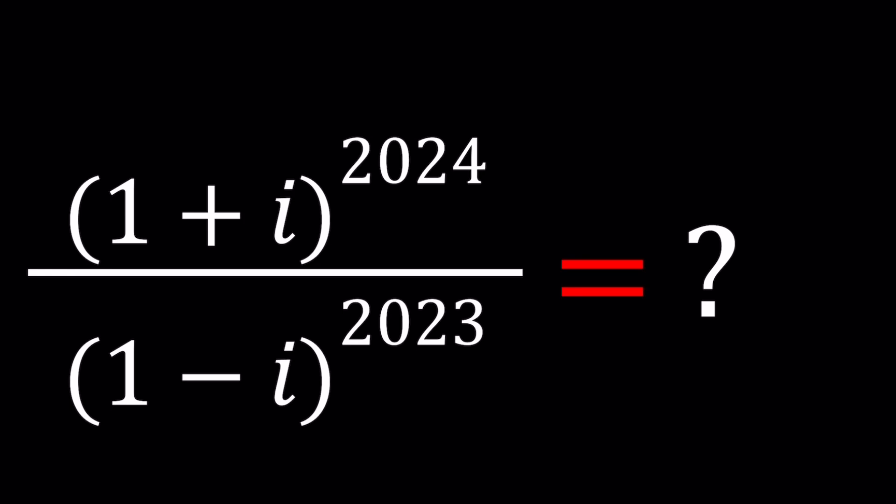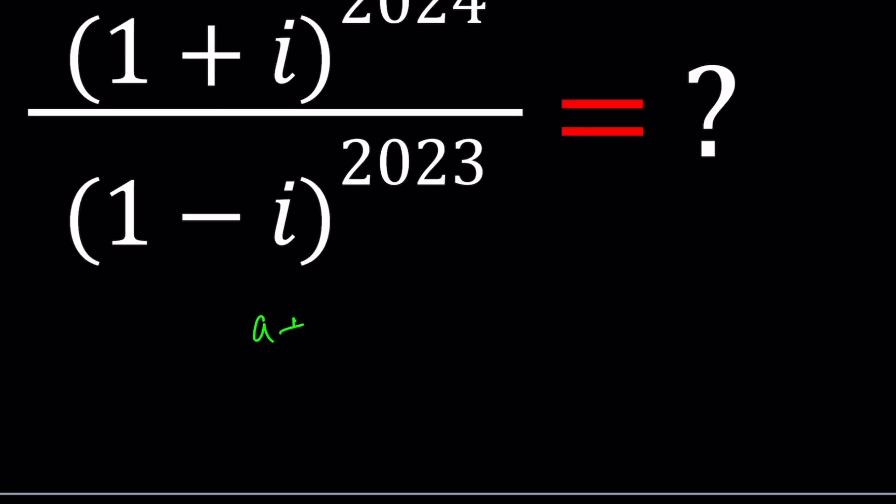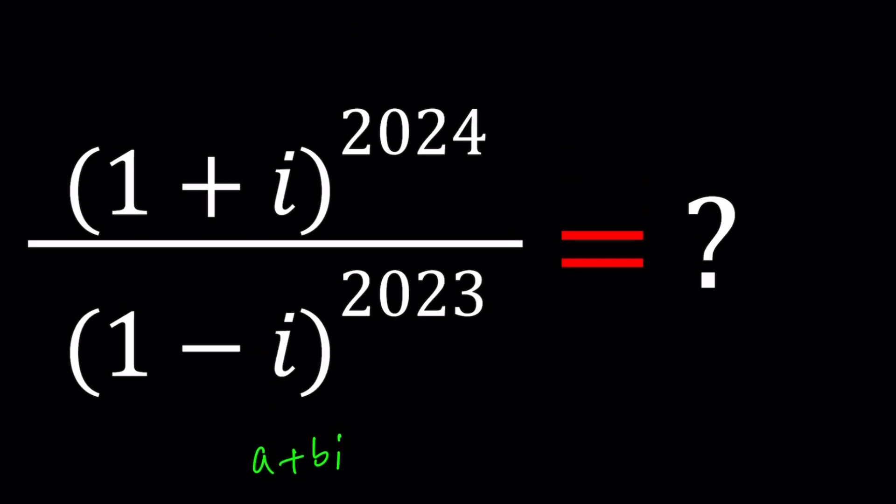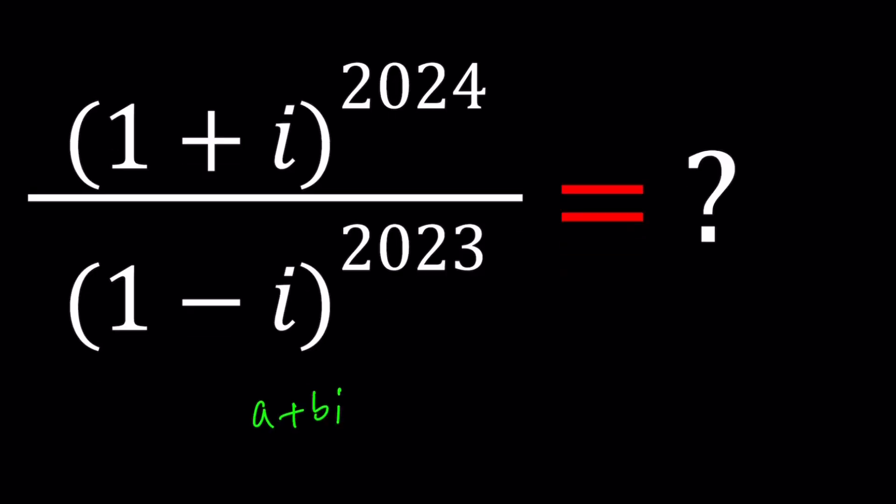But here we have complex numbers that are written in the form of A plus B I. And what is this channel called? A plus B I. Great. Now, they're written with a real part and an imaginary part and they're raised to very high powers. 2024 was so significant. Well, this is 2024, right? When this video is being recorded and 2023 is just the last year. And I just wanted them to be different. They could be the same. Maybe in another video we can talk about it. But I especially wanted to make them different because that's more fun. Great. So we're going to simplify this expression.